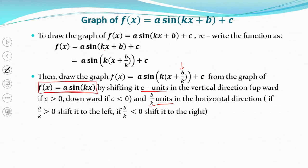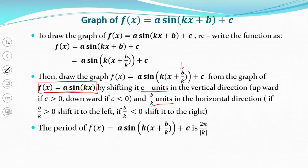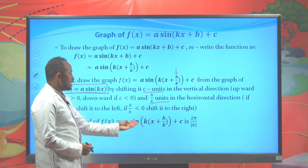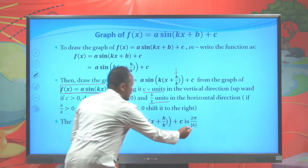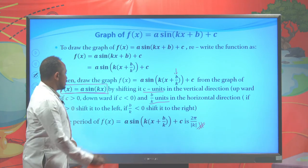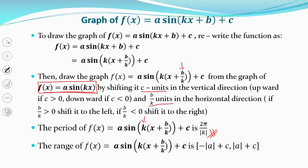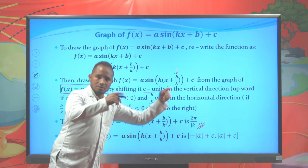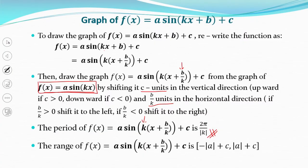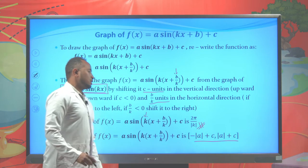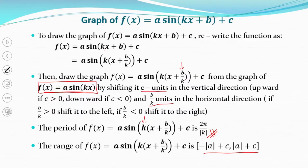Before the example, note that the period of f(x) = a·sin(k(x + p/k)) + c is the same as for a·sin(kx), which is 2π/k. Simply divide 2π by the coefficient k. The range of a·sin(k(x + p/k)) + c is from negative |a| + c to positive |a| + c, since you shift c units vertically.